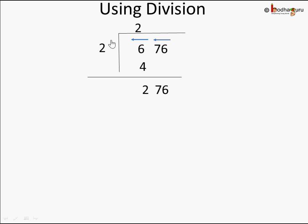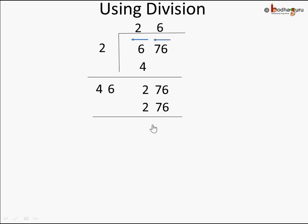We double the digit 2: 2 times 2 is 4. Now we find a digit to place next to 4 such that the same digit is used in the multiplication. We try: 41×1=41, 42×2=84, and so on. When we reach 46×6=276, that matches exactly. We subtract 276 minus 276 and get a remainder of 0.